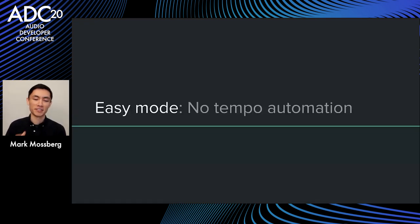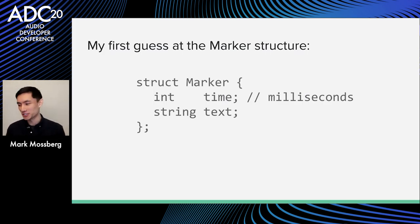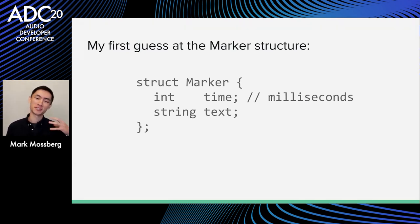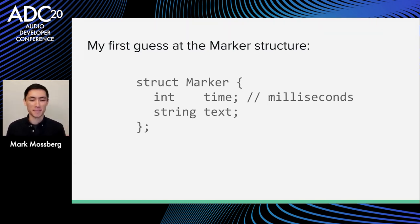Let's dive into easy mode — no tempo automation. You might think this is going to be trivial: there's probably a marker structure with text and time in milliseconds, we find it, parse it, print it, done. That's actually not correct, and that's what starts to make this interesting. Times are not stored in seconds or milliseconds — they're actually stored in terms of beat time.